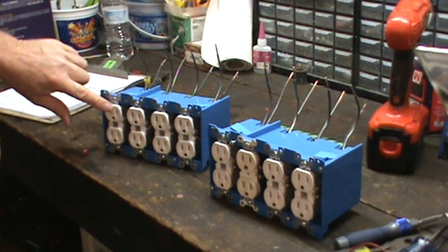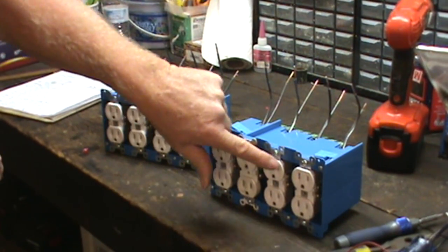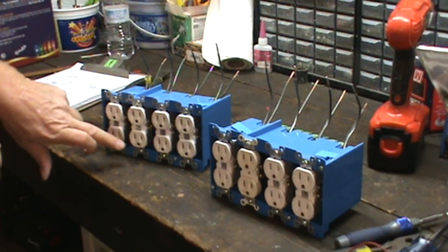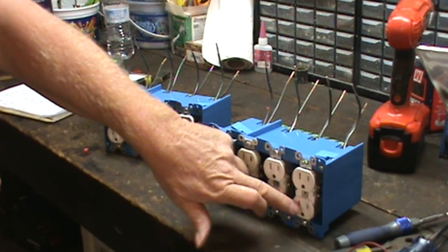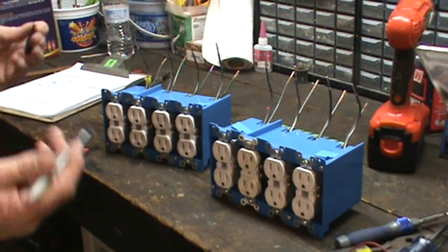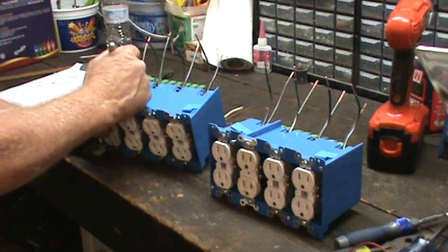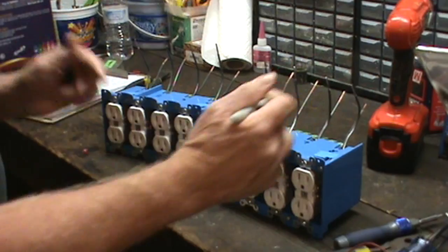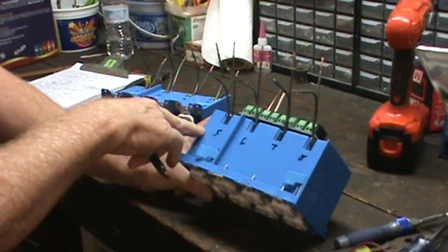So this is number one, number two, three, four, five, six, seven, eight, and then it goes to the bottom: nine, ten, eleven, twelve, thirteen, fourteen, fifteen, sixteen. I can write that right on the box right here and I know which one's which then. I'm writing it right below the black wires.